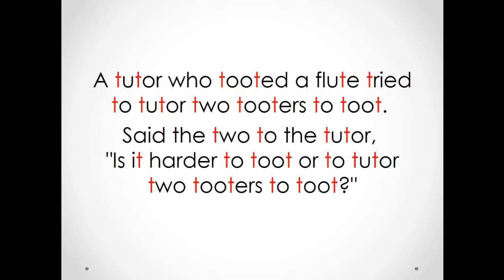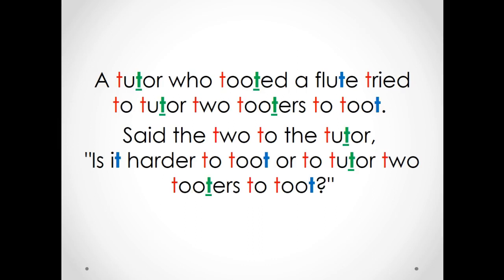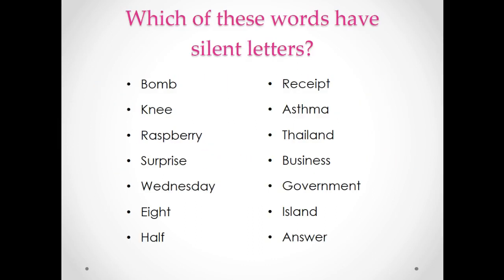For the /t/ sound, try to choose a difficult one — for example: 'A tutor who tutored a flute tried to tutor two tutors to toot.' Notice that if the /t/ is at the beginning of a word it's plosive, like 'tutor,' but if it's in the middle it's going to sound like a little /r/. These are difficult for students. You can also help them identify silent letters — which of these words have silent letters? Anytime you want, pause the video and take notes.